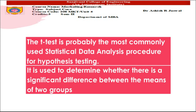Let us try to understand what are the different types of t-tests available. There are three main types: an independent sample t-test which compares the means for two groups; a paired sample t-test that compares means from the same group at different times; and a one-sample t-test that tests the mean of a single group against a known mean.